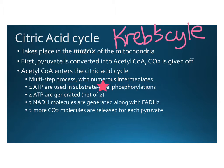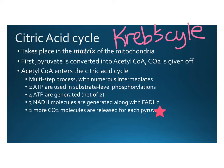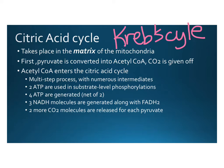There's a multi-step process with numerous intermediate molecules formed, some unstable and breaking apart. In all those steps, two ATP molecules are used in substrate-level phosphorylations and four ATP molecules are generated, giving a net of two ATP. Also, three more NADH molecules are generated along with another electron carrier called FADH2. Two more carbon dioxides are released for each pyruvate — so that accounts for all six carbons from glucose: one in the first step, two more in the citric acid cycle, and this happens twice because we had two pyruvates.